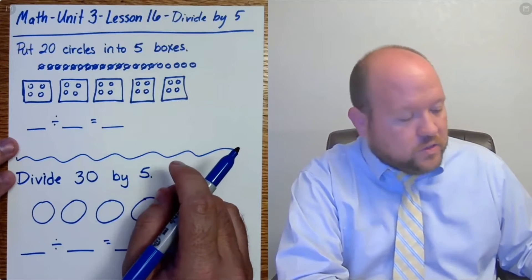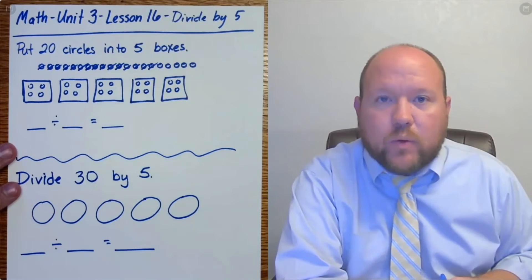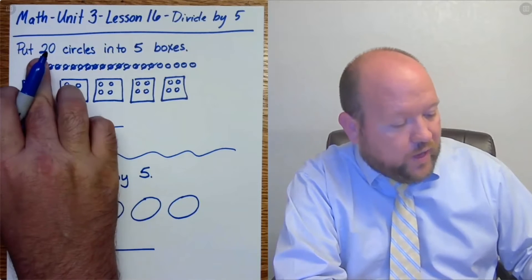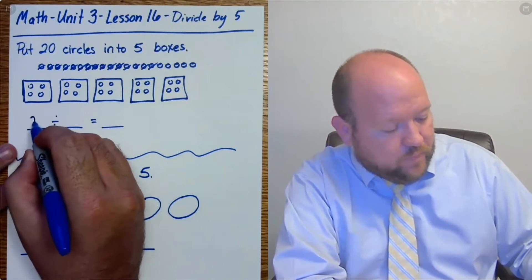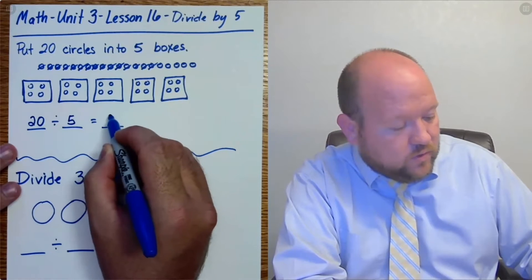All right. So we have 4 in each box when we get done. Now how do we write this as a division equation? So we have 20 into 5 boxes. What we would do is 20 divided by 5 equals 4.